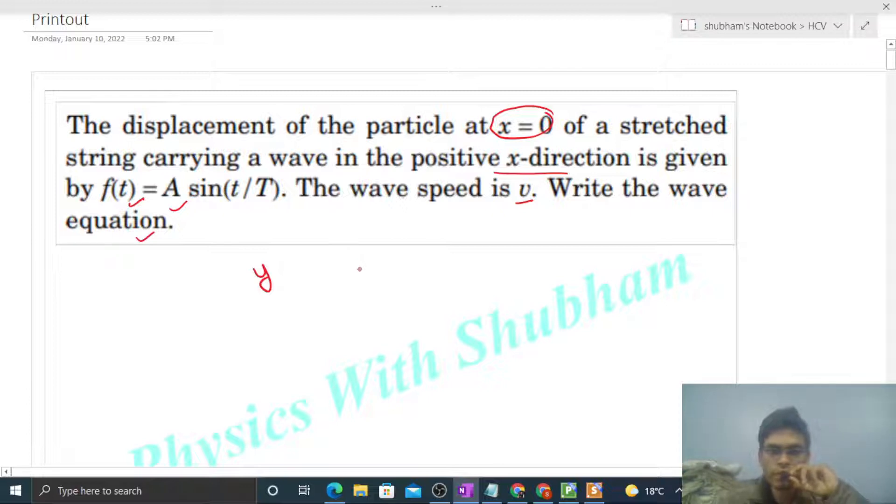So a standard form, the equation of any wave traveling in positive x direction we write as A sin(ωt - kx + φ). This is the standard form of the equation of the wave traveling along positive x direction, isn't it?